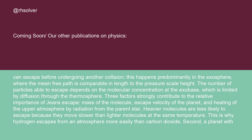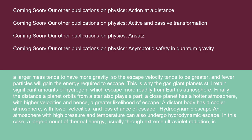Second, a planet with a larger mass tends to have more gravity, so the escape velocity tends to be greater, and fewer particles will gain the energy required to escape. This is why the gas giant planets still retain significant amounts of hydrogen, which escapes more readily from Earth's atmosphere.